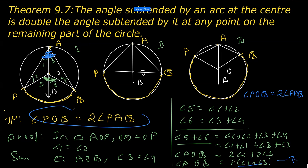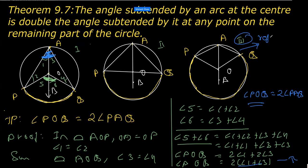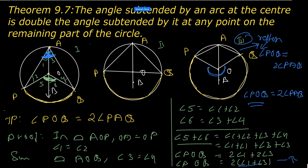We have one more thing to mention: for the third figure — case three — instead of angle POQ, we have the reflex angle POQ, since it's a major arc. So we say reflex angle POQ is equal to twice angle PAQ. It is important to remember that in the third figure, POQ is a reflex angle. This is how we prove this theorem.